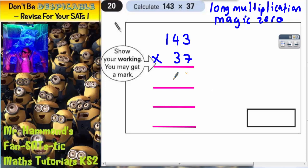But you do need three lines of working out. What these lines are for will become clear as we go on.